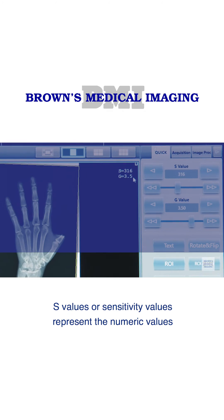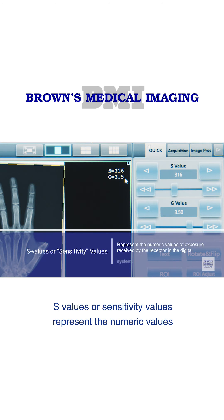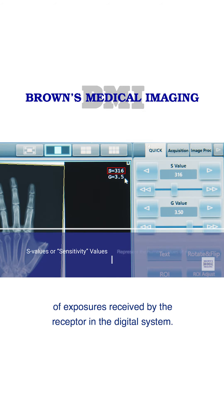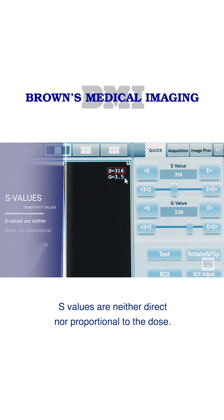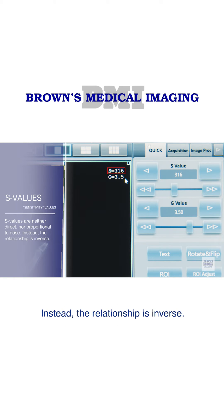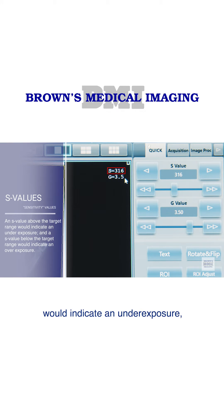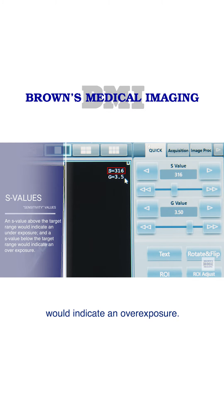S-values, or sensitivity values, represent the numeric values of exposures received by the receptor in the digital system. S-values are neither direct nor proportional to the dose — instead, the relationship is inverse. So an S-value above the target range would indicate an underexposure, and an S-value below the target range would indicate an overexposure.